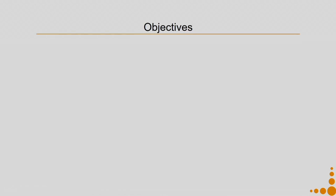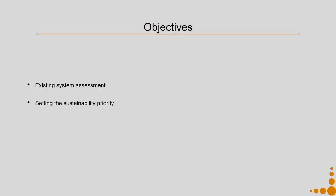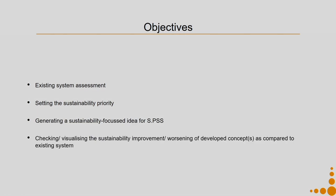What are the objectives of this methodology? Objective one is to do an existing system assessment. Then, set the sustainability priority in a given context. Then, generate sustainability-focused ideas for sustainable product service systems. And finally, check or visualize the sustainability improvement or worsening of developed concepts as compared to the existing system.